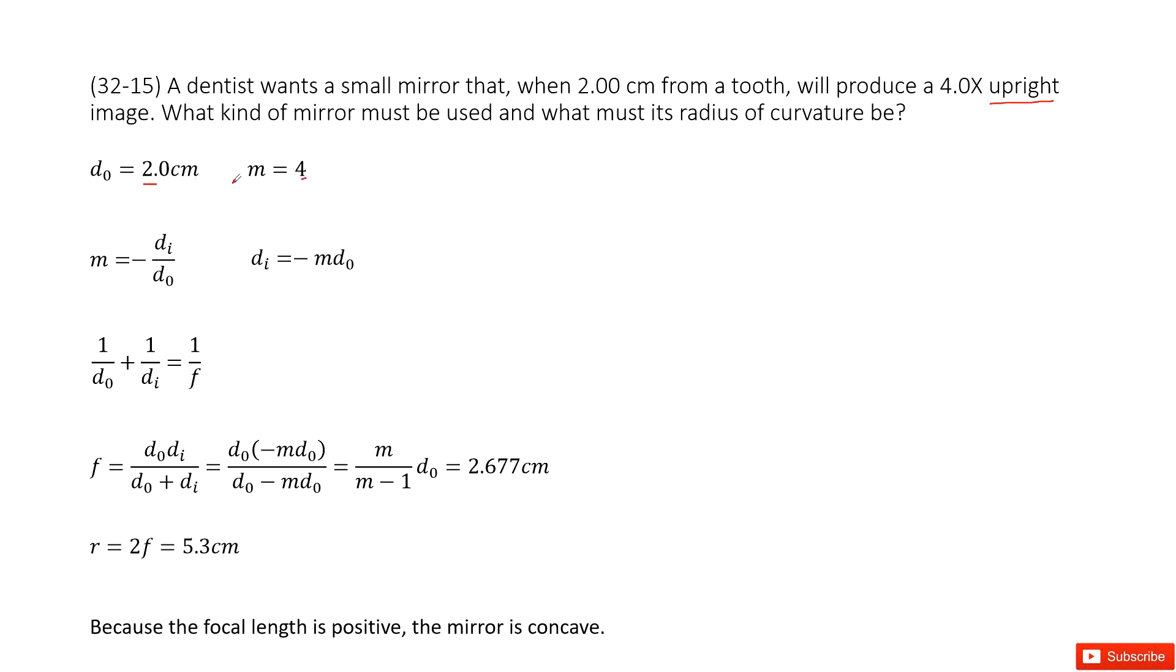Now we get these two numbers, we need to determine what kind of mirror it is. It looks like we need to find the radius of the mirror. By definition of this magnification M, this is negative Di over D0, so we can get the function for Di.